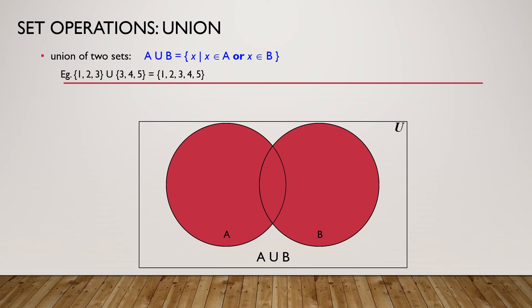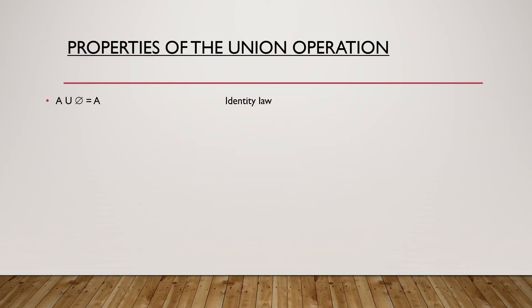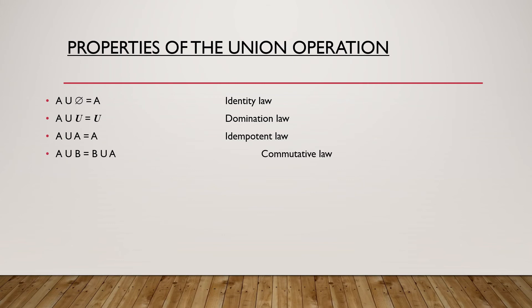Next we have properties of union. First is the identity law: A ∪ Φ = A. Next, if you take the universal set union with set A, then the universal set dominates — this is the domination law. Next, union with the set itself gives the set only. And A ∪ B is the same as B ∪ A — this is the commutative law. Associativity also holds.